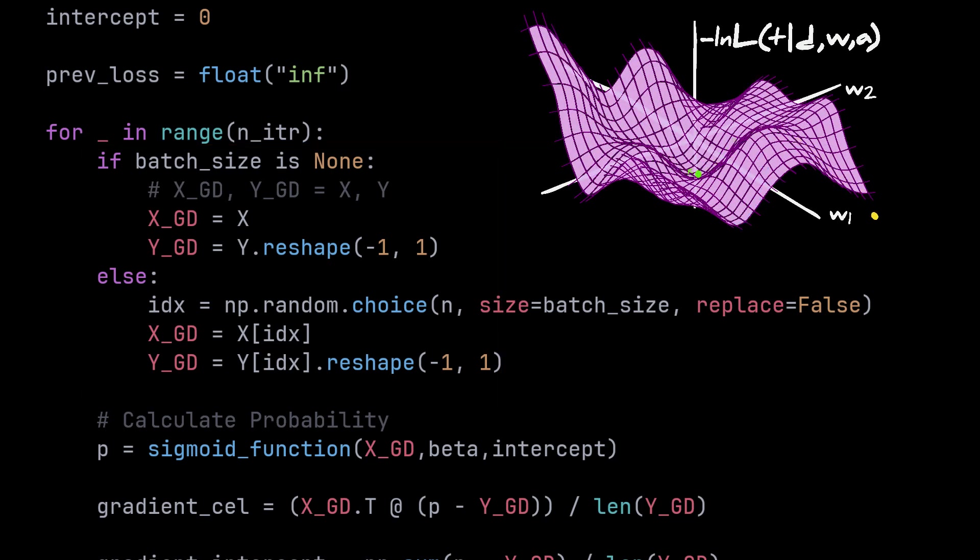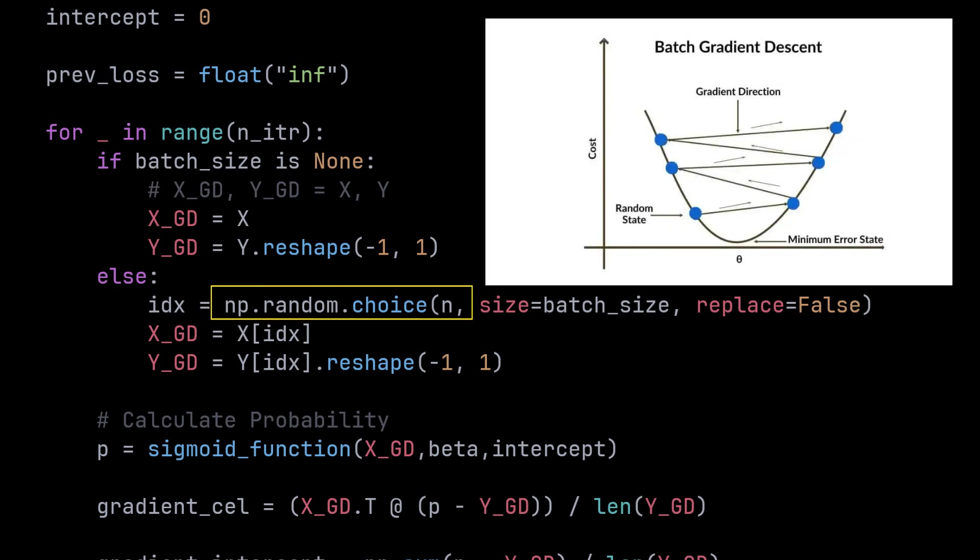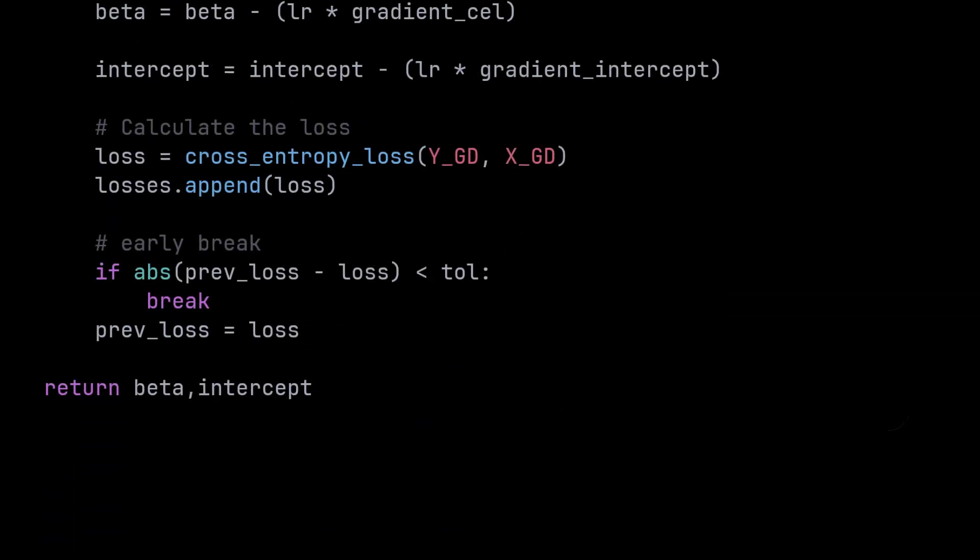If the batch size isn't specified, we're gonna use all the data to calculate the next step, which is the full batch gradient descent. Otherwise, we're gonna use NumPy random choice, which selects data without replacement with the specified size. To check the loss improvement, we need to implement the cross-entropy loss function to calculate the current loss and compare to the previous one.